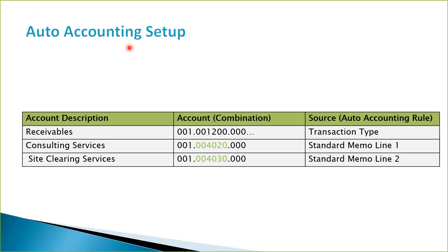The way we want to do this is: for receivables, for example, we can set up the account combination on the transaction type when we create it. And then when we go and define our auto accounting rules, we are going to say that for receivables, we want the account to be derived from the transaction type, and that account is going to be defined there.